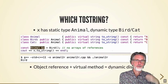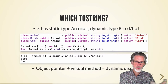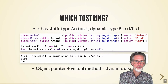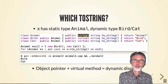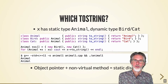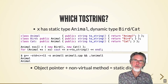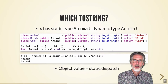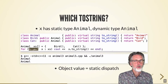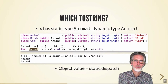In C++, if I have a reference or a pointer and a virtual method, then I'll get dynamic dispatch. If the method is not virtual, I'll get static dispatch regardless of whether I'm using a reference or a pointer. And if I directly have an object value — not a pointer or a reference — then regardless of what the method is, I don't get dynamic dispatch; I'm going to get static dispatch.